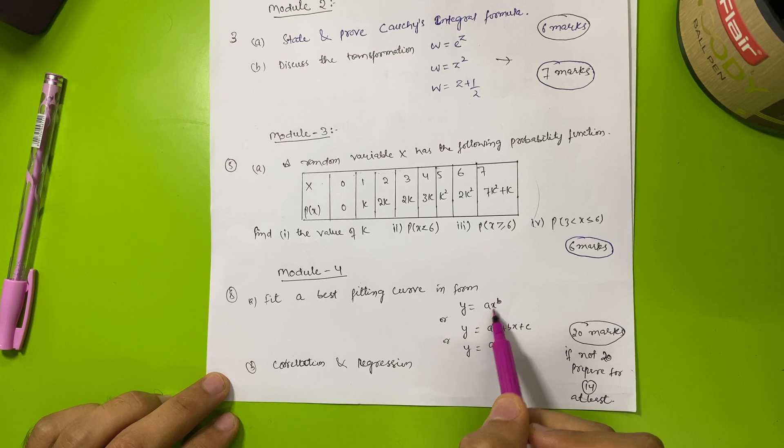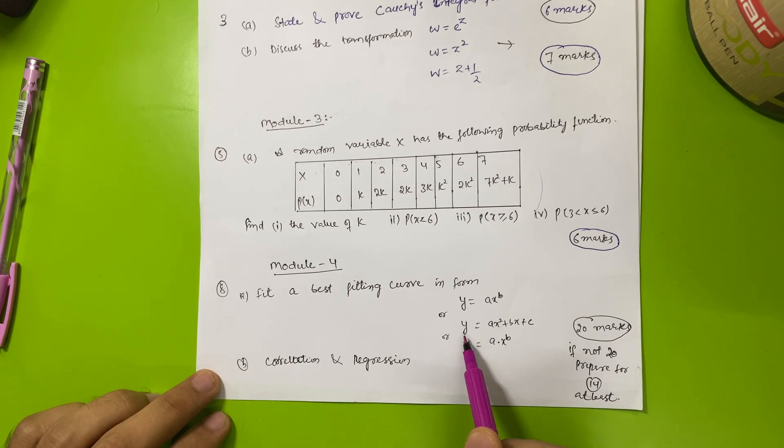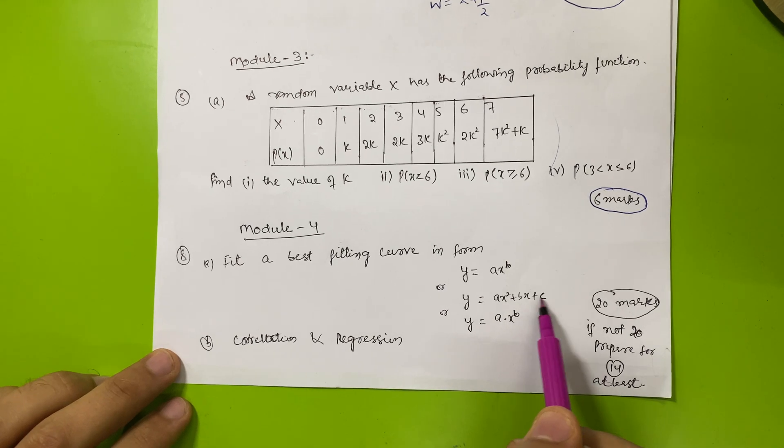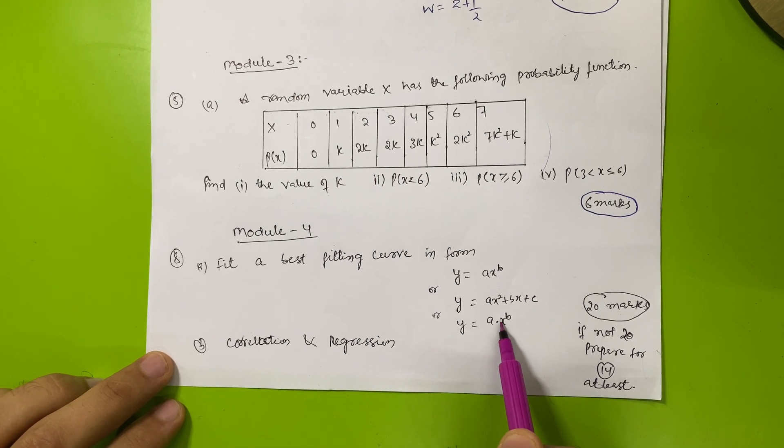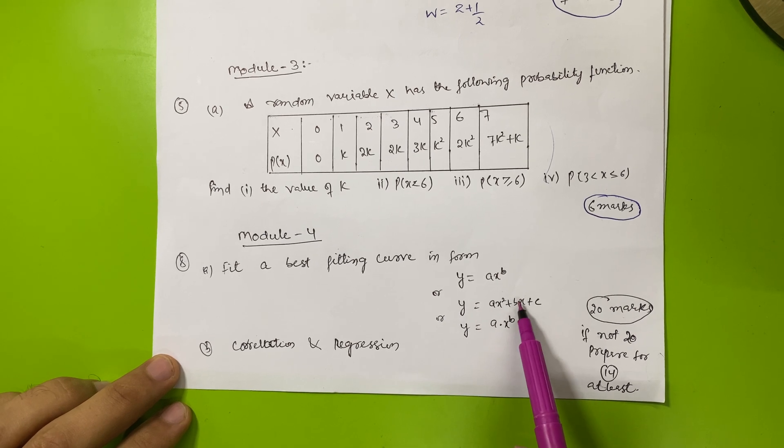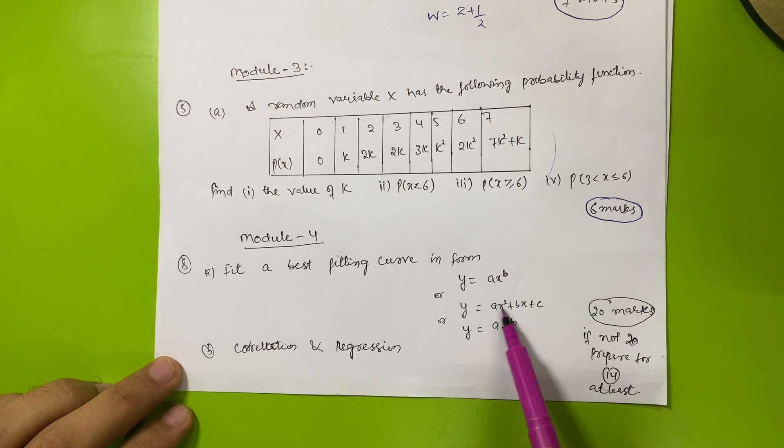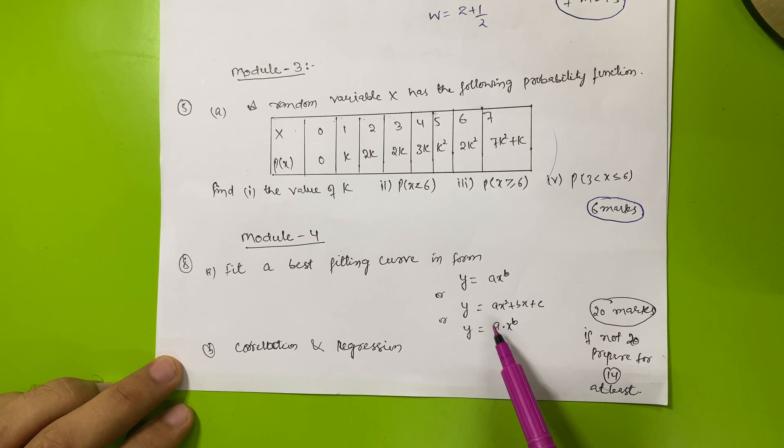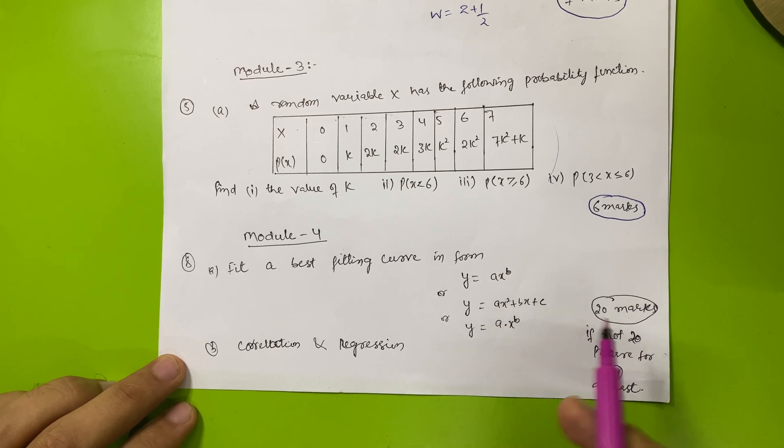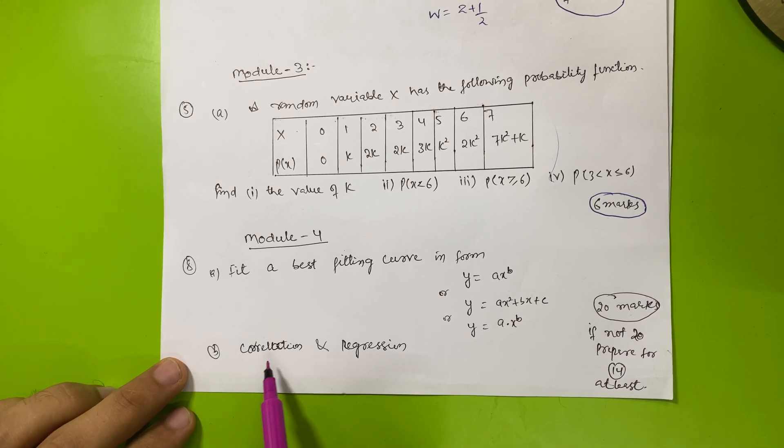This is formula-based module. They may ask out of these three, one question definitely: y equals ax raised to power b, fit a best curve, then y equals ax square plus bx plus c, y equals a plus x raised to power b. These are the three probabilities. You have to prepare these three to secure 20 marks.